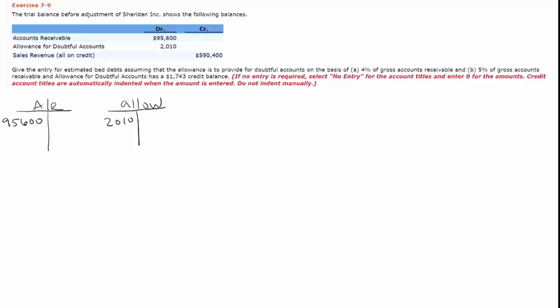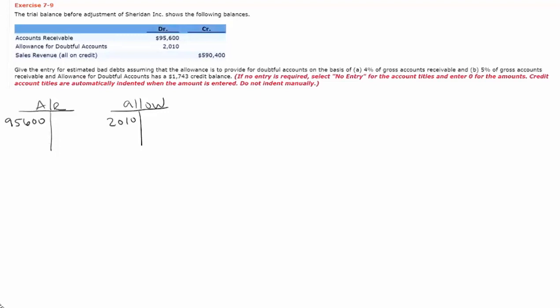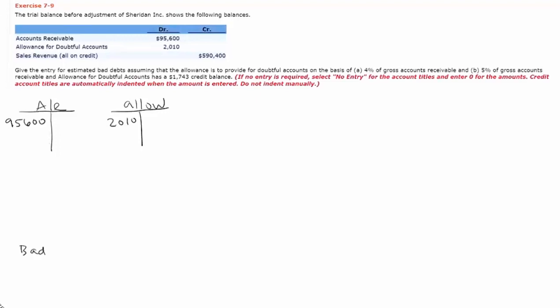The question is asking for the adjusting journal entry to record bad debt expense. That journal entry will be debit bad debt expense and credit the allowance for bad debt, and so we just need to figure out that dollar amount.